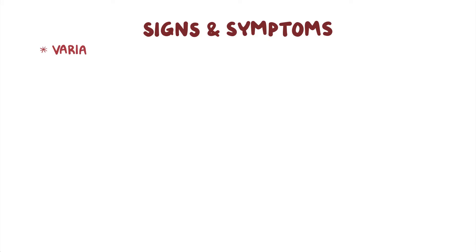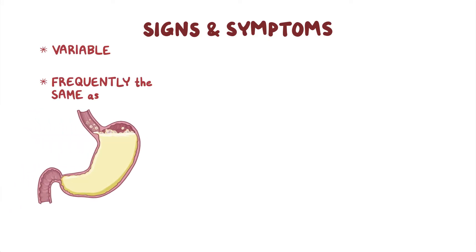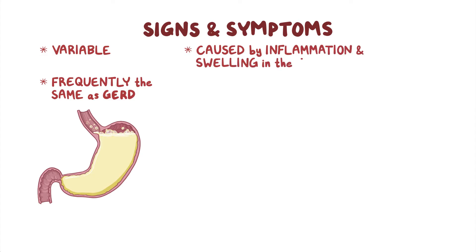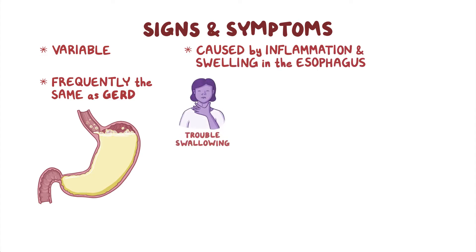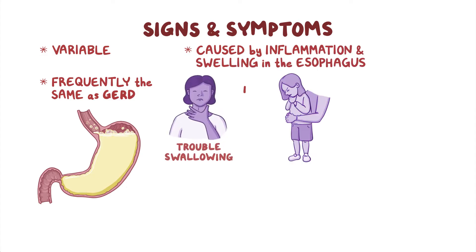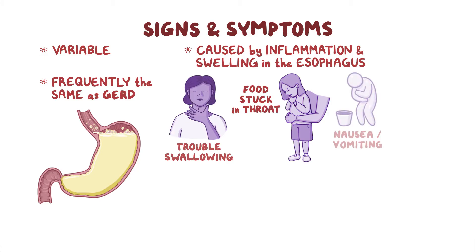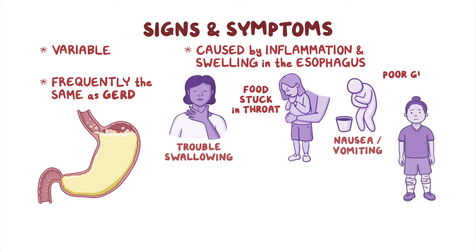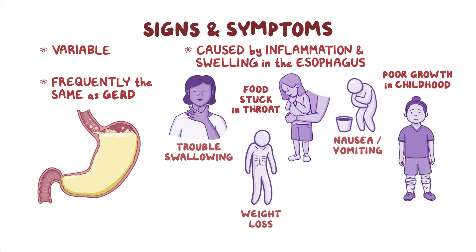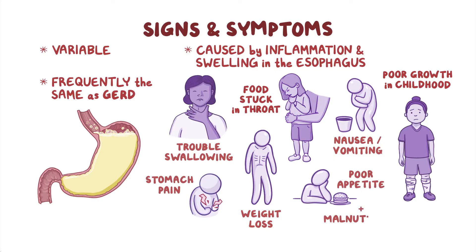Signs and symptoms of eosinophilic esophagitis can vary quite a bit and are frequently the same as those for gastroesophageal reflux disease, also known as GERD. These symptoms are caused by increased inflammation and swelling within the esophagus and include trouble swallowing, food getting stuck in the throat, nausea, vomiting, poor growth in childhood, weight loss, stomach pain, poor appetite, and malnutrition.